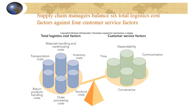Supply chain managers need to balance the six logistics cost factors against the four customer service factors. Customers want convenience — the right product in the right place at the right time as fast as possible. They also want the product to be dependable and high quality, and they want to be able to communicate with people who have sold them the product.